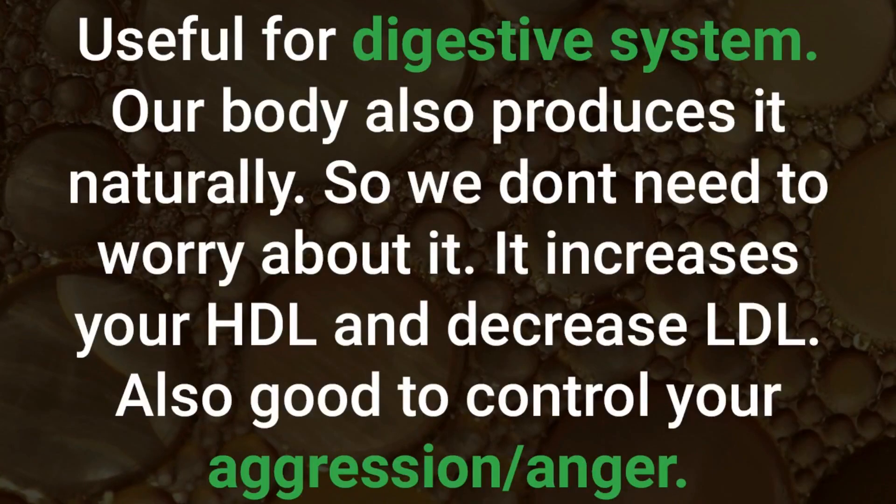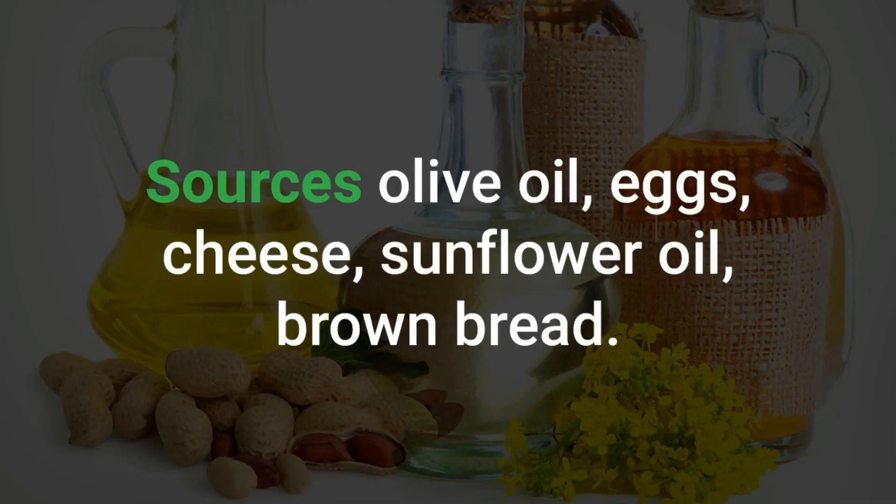Omega-9 is useful for the digestive system. Our body also produces it naturally, so we don't need to worry about it. It increases your HDL and decreases LDL, and is also good for controlling aggression and anger. Sources include olive oil, eggs, cheese, sunflower oil, and brown bread.